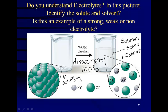So the solute is the sodium chloride, the salt. The solvent is water and since it dissociates 100%, this is going to be an example of a strong electrolyte.